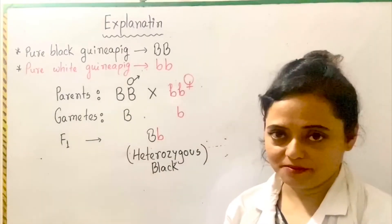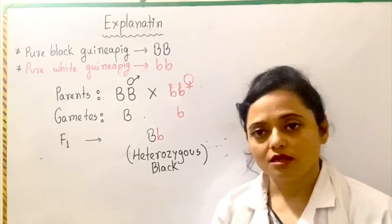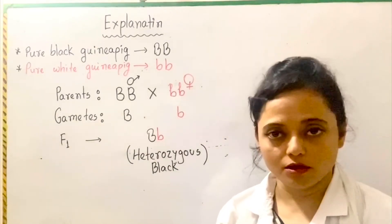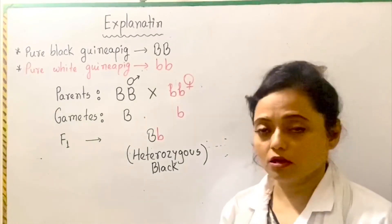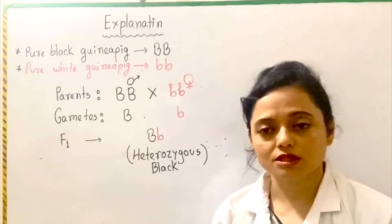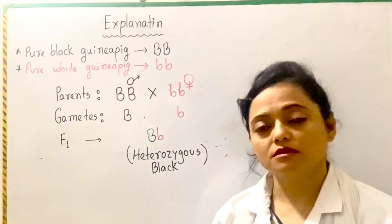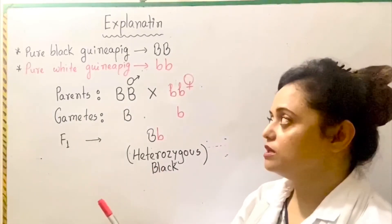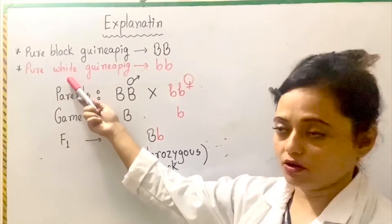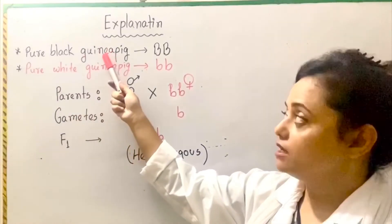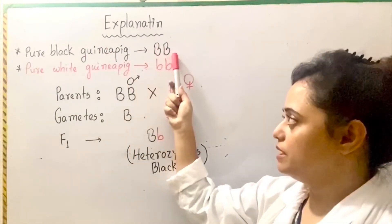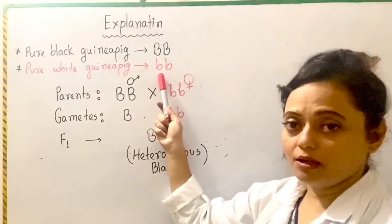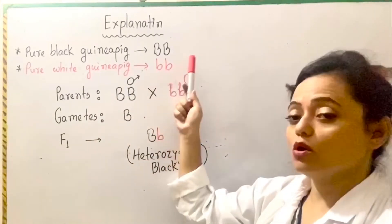Let's consider two guinea pigs as the parents to prove the law. We know that pure black coat color of guinea pig is dominant over the white coat color. According to genetical laws, we know different characteristics as dominant and recessive. Black color is always dominant over white color. So pure black guinea pig contains the genotype capital B capital B, which is a homozygous character. Pure white guinea pig contains the genotype small b small b, which is also homozygous.